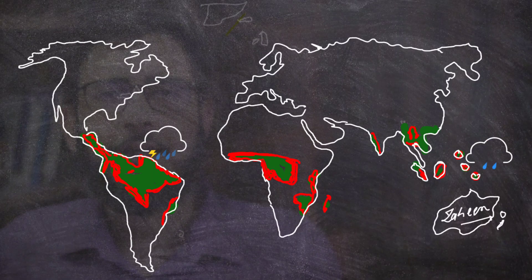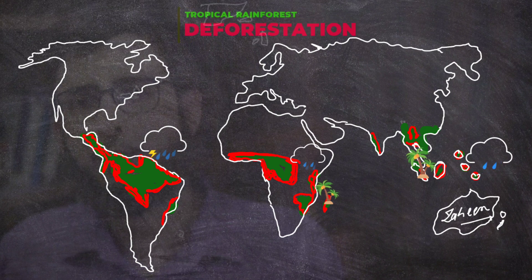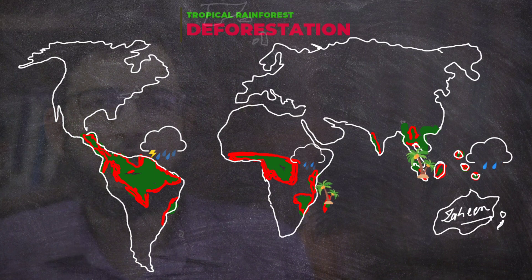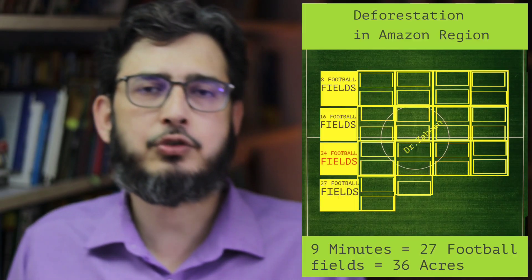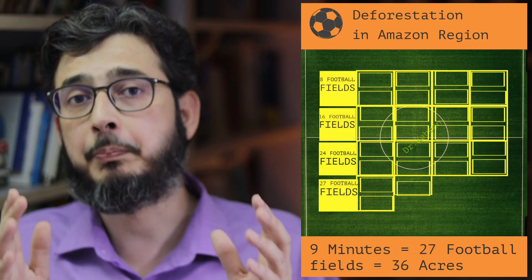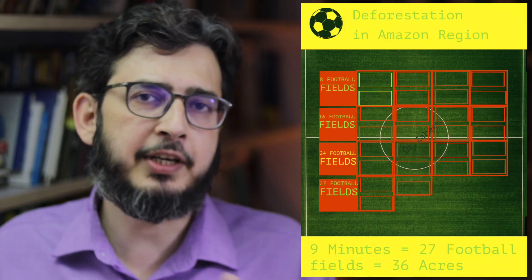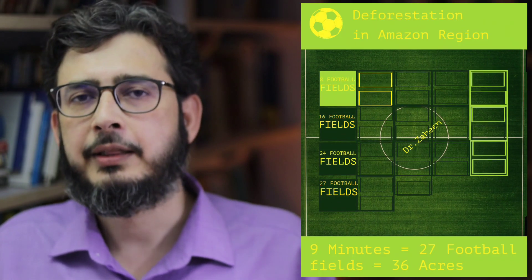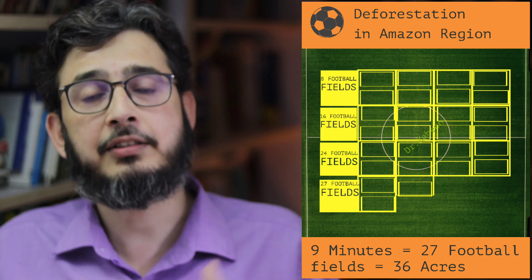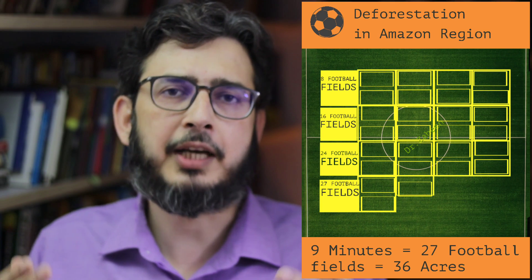First in our list is deforestation. Look at the map — the region in red shows where deforestation has taken place or is taking place. Look at the Amazon forest, also known as the lungs of the world. Here the rate of deforestation is equivalent to three football fields per minute. If the present video is about nine minutes long, that means 27 football fields — in aggregate, 36 acres, approximately three times the size of an 11-acre college or school.